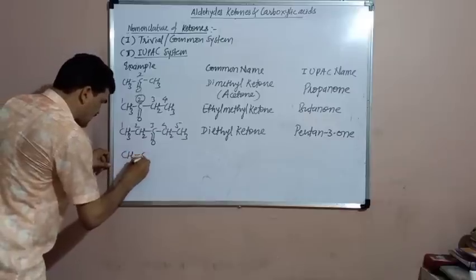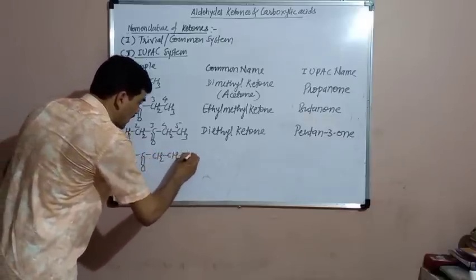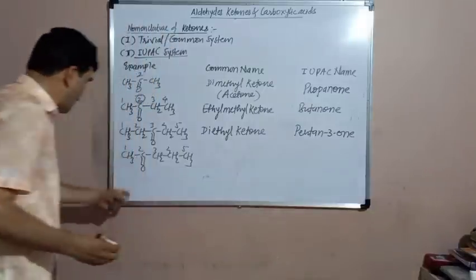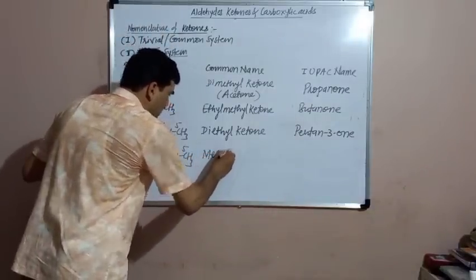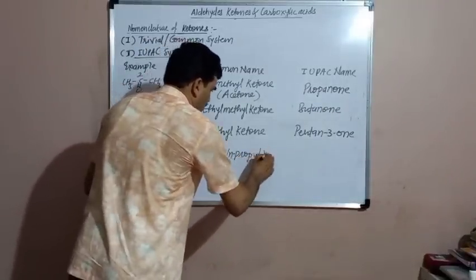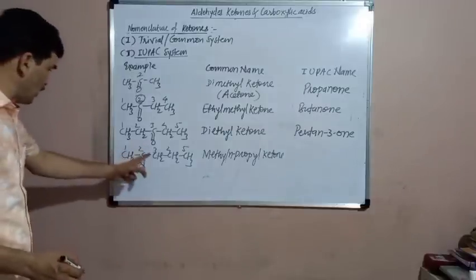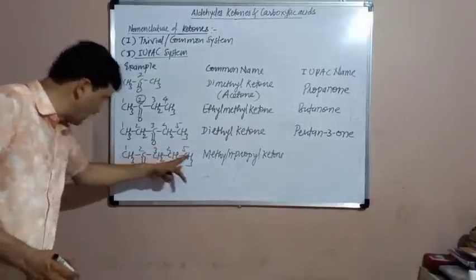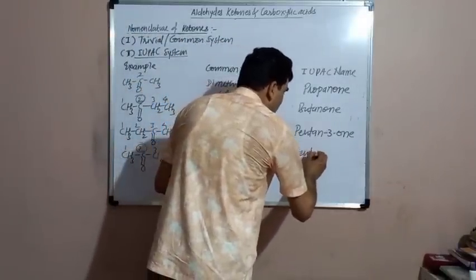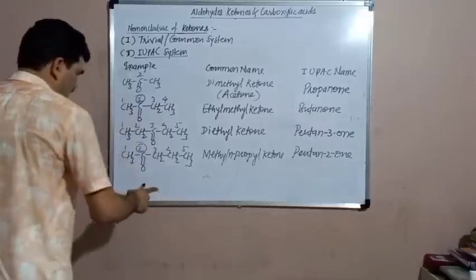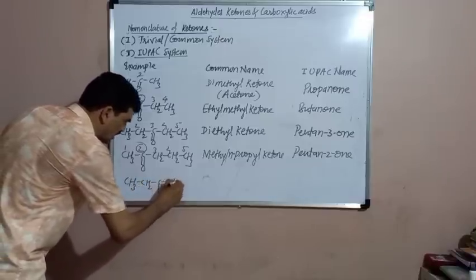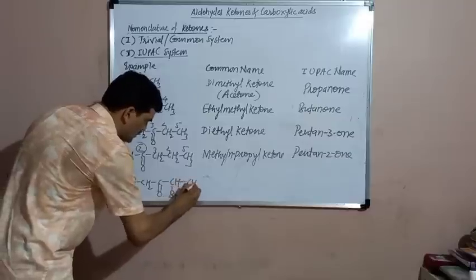Next example: CH₃-CO-CH₂-CH₂-CH₂-CH₃. Here also the longest chain contains 5 carbon atoms, so the parent alkane is pentane. The common name: alphabetically M comes before N, so methyl is written first — methyl n-propyl ketone. For the IUPAC name, the longest chain contains 5 carbon atoms so the parent alkane is pentane, and the keto group is at position number 2. Therefore the IUPAC name is pentan-2-one.